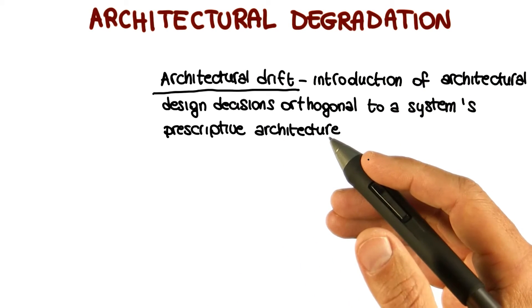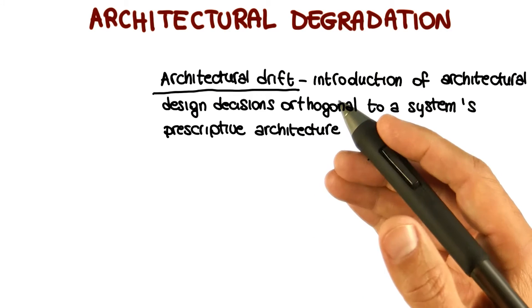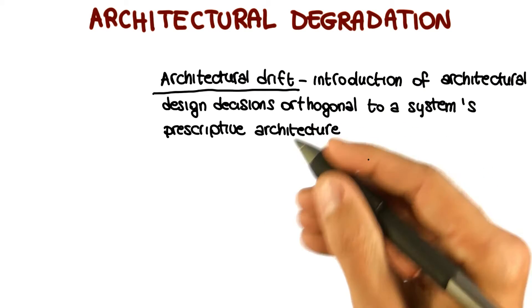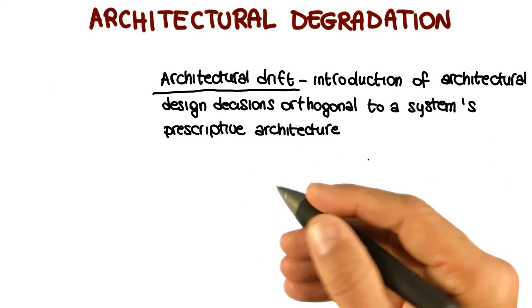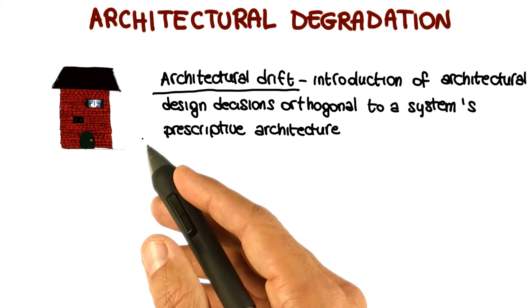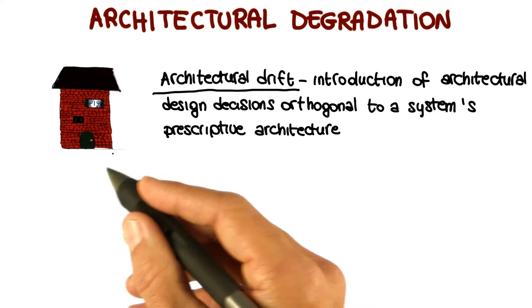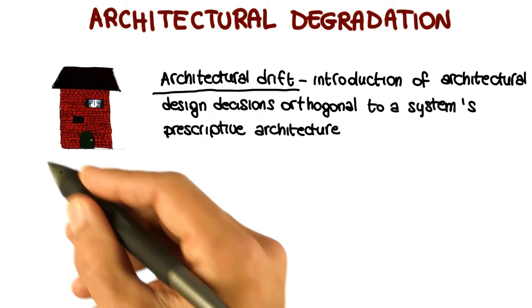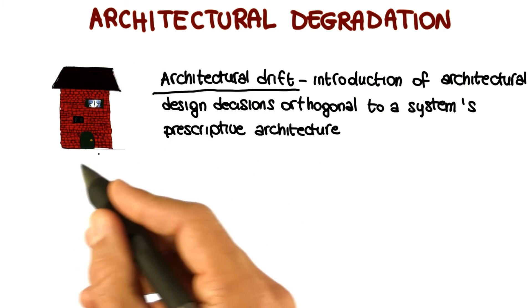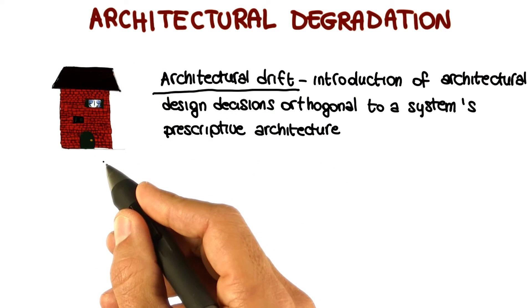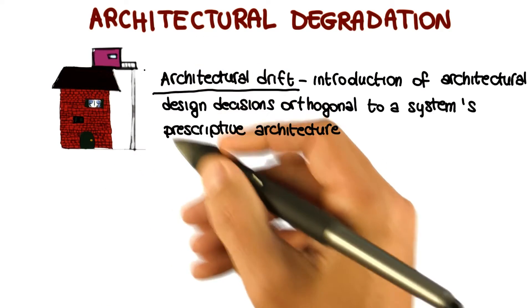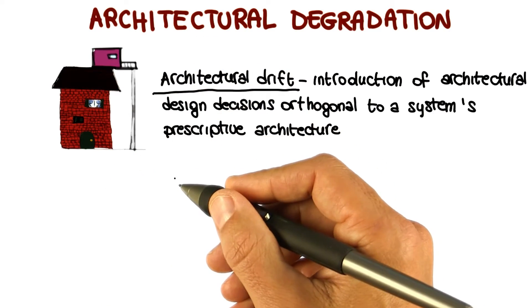That is, they are not included in, encompassed by, or implied by the prescriptive architecture. And the result of architectural drift is that you start from a clean architecture, like the one that I'm showing here, and then you start adding pieces without following a clear plan.